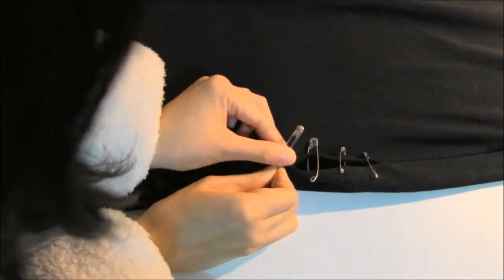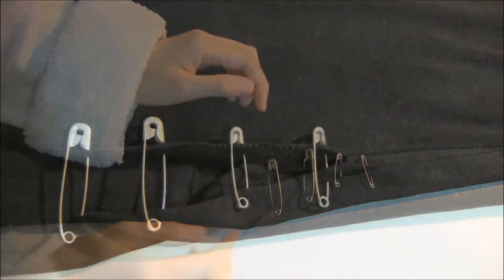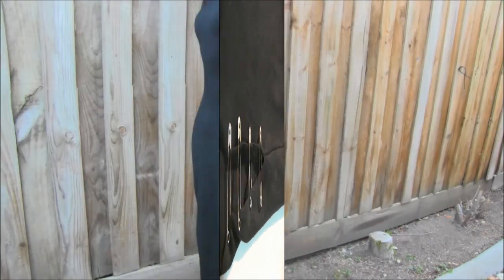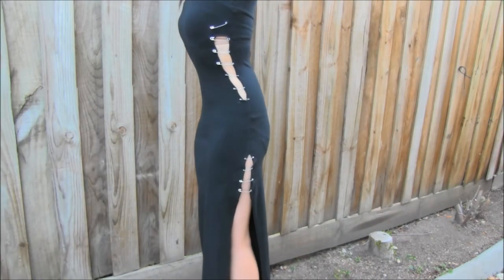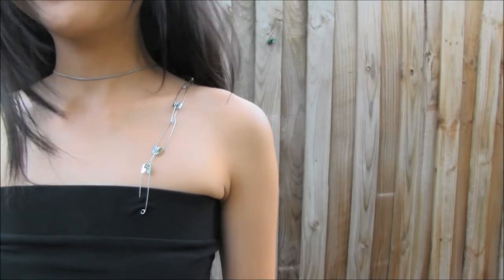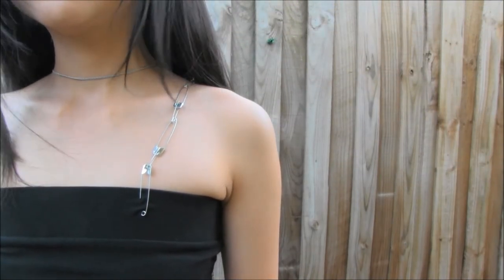Then place the safety pins, this time of increasing size, and voila we are done with our safety pin cutout dress. Here I've added a strap made out of safety pins for a one shoulder look.